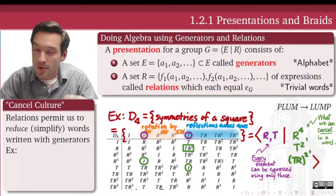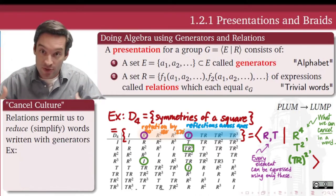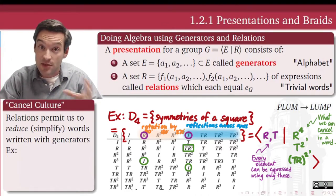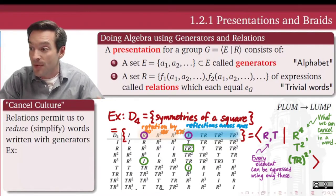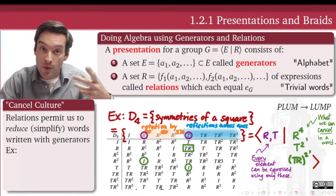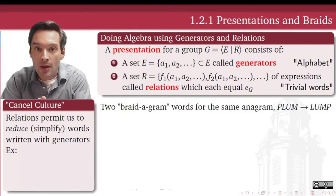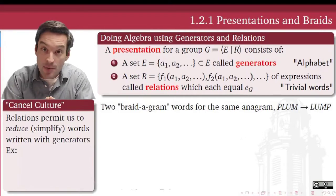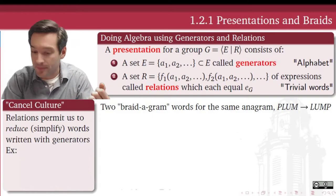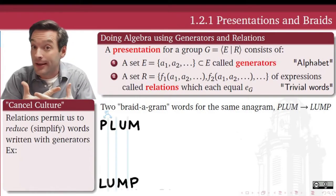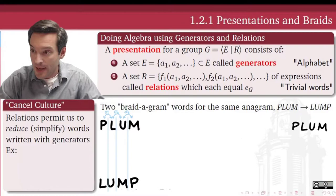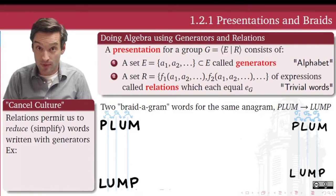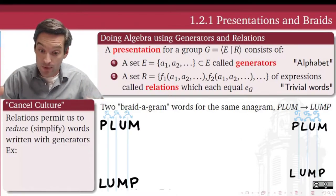Now let's shift gears and look at how we can implement a presentation of generators and relations for the group of permutations, to help us simplify an algebraic expression. We'll look at a single anagram — turning the four-letter word 'plumb' into the four-letter word 'lump' — written using two different braidograms, two different combinations of adjacent transpositions. We want to use the algebraic relationships between those transpositions to explain why those two words represent the same element in our permutation group.